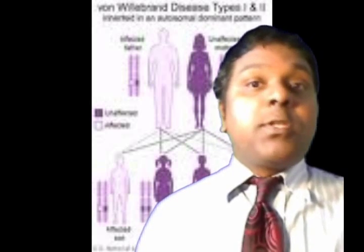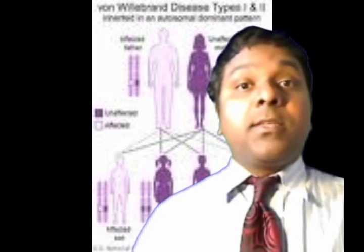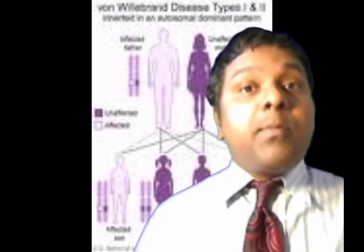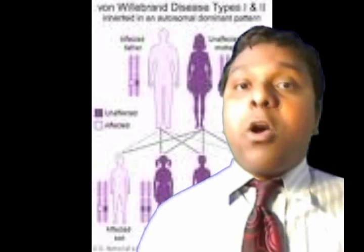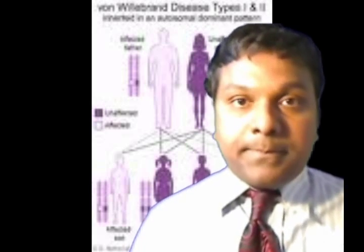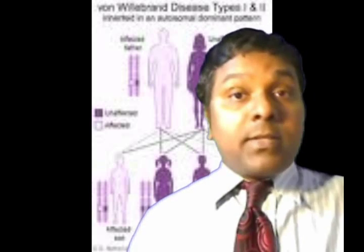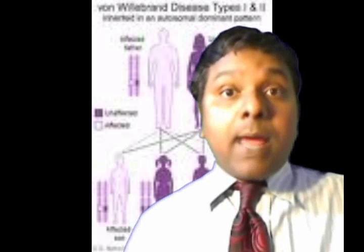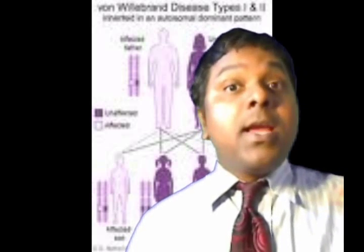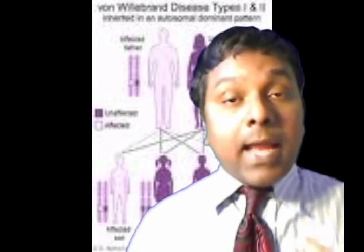You can determine which type is most serious: type 3 is the most serious because von Willebrand factor is completely absent. To summarize: if it is about 90 percent present, that is type 1; about 10 to 15 percent deficiency is type 2; less than 10 percent is type 3. The classification is based on both quantity and quality.